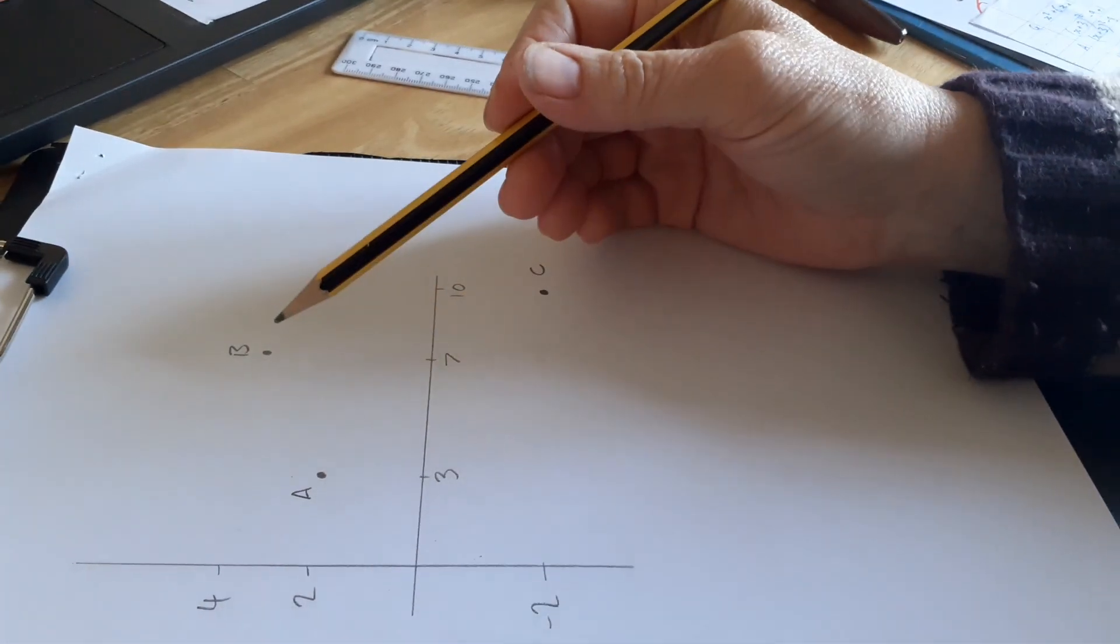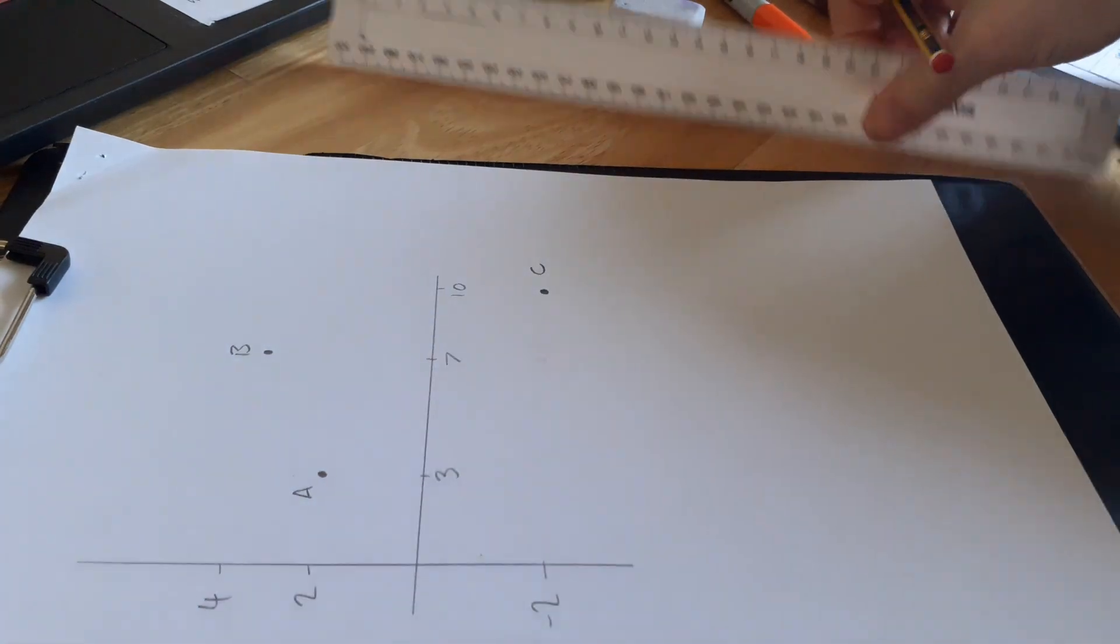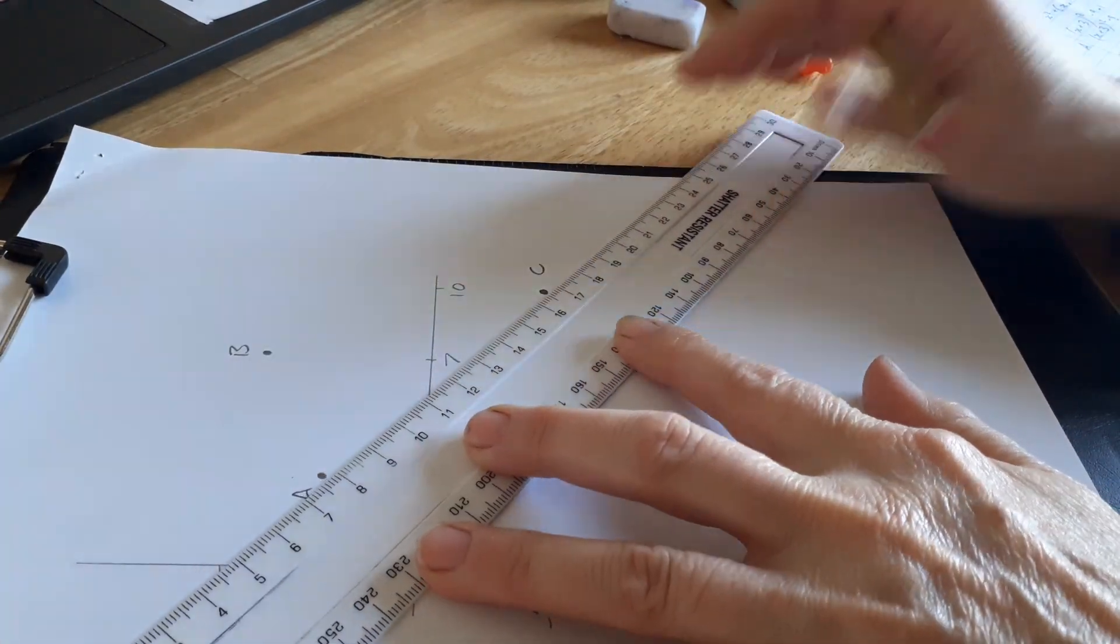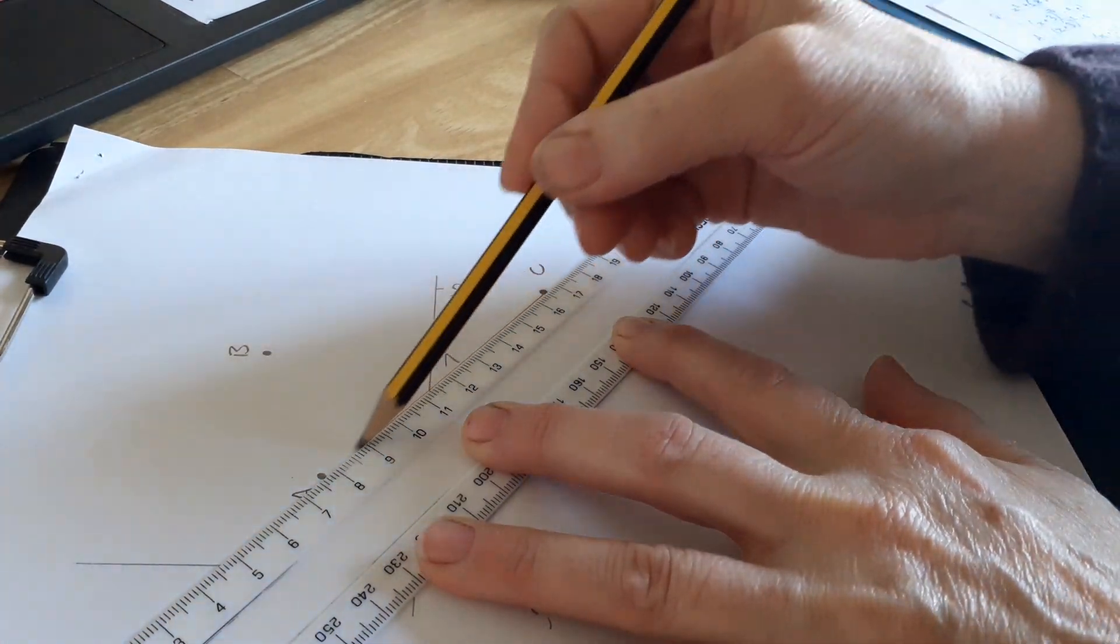So I've plotted the points that they gave us in the question, and they tell you it's a right angle triangle.